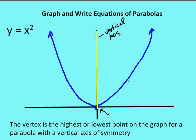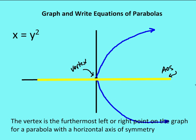The vertex is the highest or lowest point on the graph for a parabola with a vertical axis of symmetry. For a happy face parabola the vertex is the lowest point, and for y equals negative x squared it's the highest point. In a parabola that faces right or left, the vertex is going to be the furthermost left or right point on the graph — with a parabola that has a horizontal axis of symmetry.